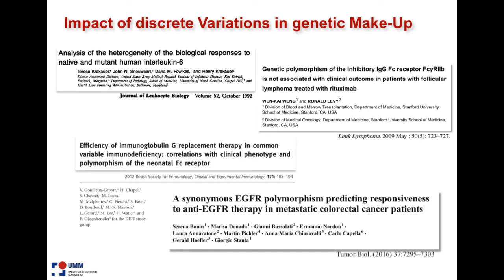Still another aspect: we know from immunological therapy that people react differently to therapy — in this particular case, to cancer, for example. We know that SNP variation in targets will change the response of the patient to a standardized drug dosage.